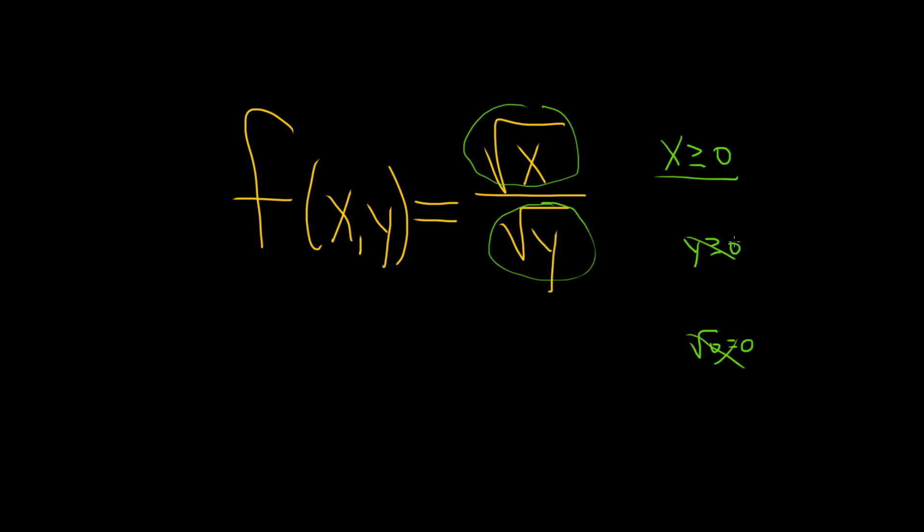So instead, we are a little more strict. We require that y is strictly positive. That way, we don't allow for the case when the bottom is 0.